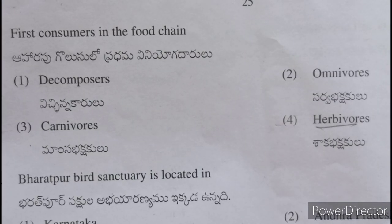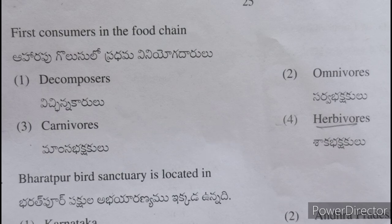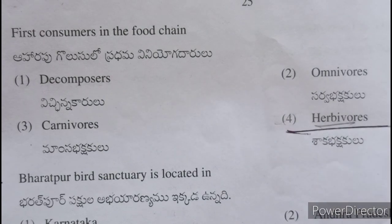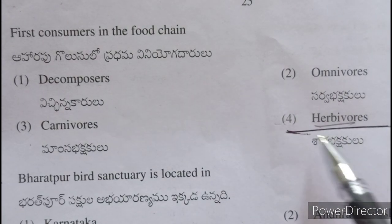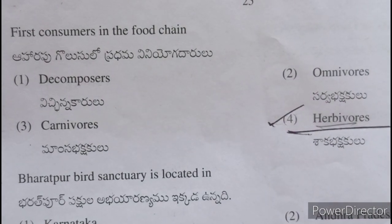The first consumers in the food chain — aharapu gulusu lo pradama viniyoga dharu evaru — are herbivores. Herbivores, shaka bhakshakulu.